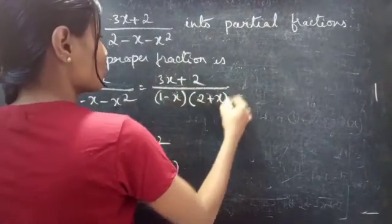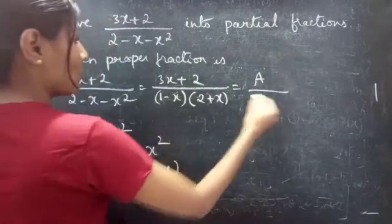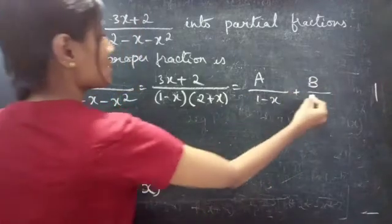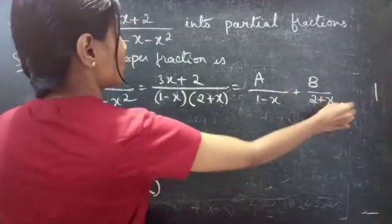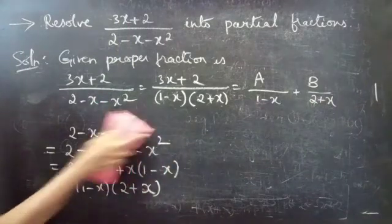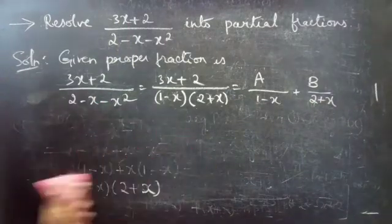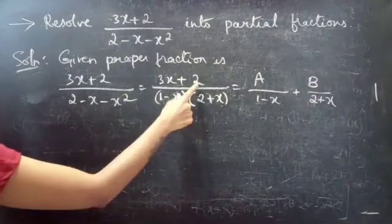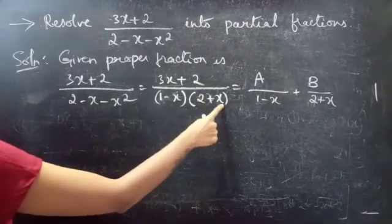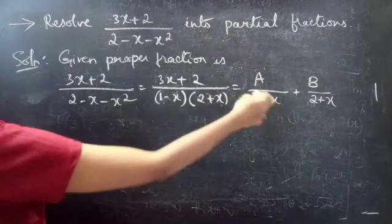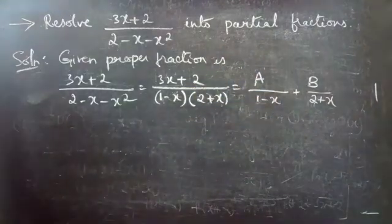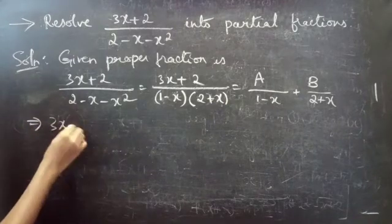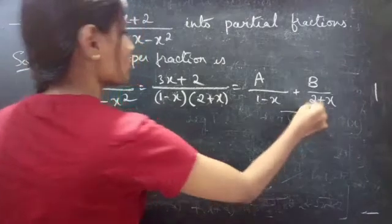So we can write 2 minus x minus x square as 1 minus x into 2 plus x. This gives us 3x plus 2 by 1 minus x into 2 plus x. Since 3x plus 2 is linear, 1 minus x is linear, and 2 plus x is linear, we can write it as A by 1 minus x plus B by 2 plus x. We can consider this as equation 1.